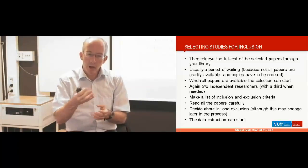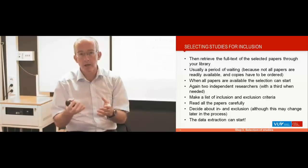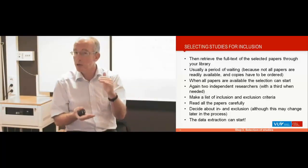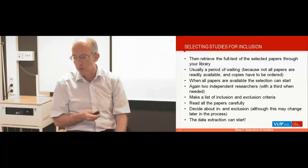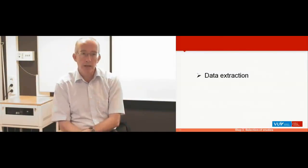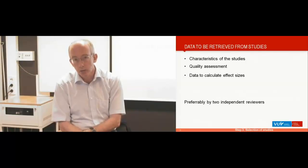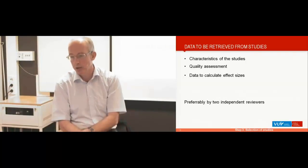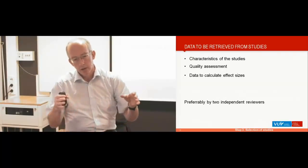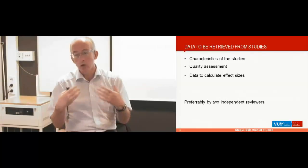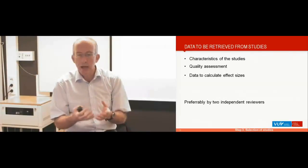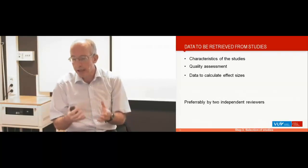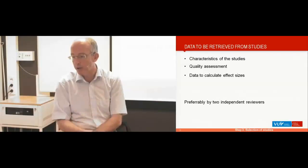Suppose you have read those 100 PDFs and decide that you include 22 of those papers. You select those 22 papers and can start with the data extraction. What exactly do you want to retrieve — which data do you have to get out of those studies? You have to get all kinds of characteristics of the study, you have to do risk of bias assessment, and you have to extract data to calculate effect sizes. All this should, preferably, be done by two independent reviewers.